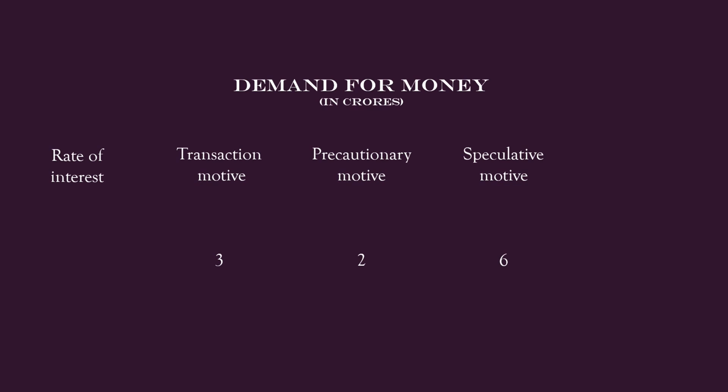Look at the table. The interest level falls from 9% to 3%. The transaction demand for money remains at 3 crores — it doesn't change; it depends on the income. Similarly, the precautionary demand for money, 2 crores, also doesn't vary when the interest rate changes. It also depends on the income.